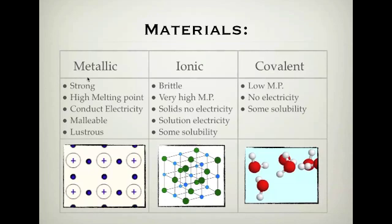So metallic bonds are strong, they have a high melting point, they conduct electricity, they're malleable — that means they bend easily — and they are lustrous, which means they're quite shiny.